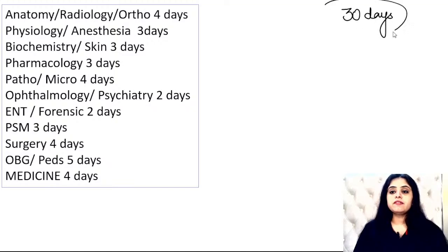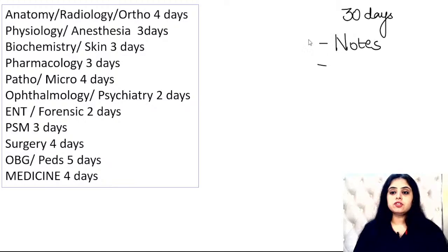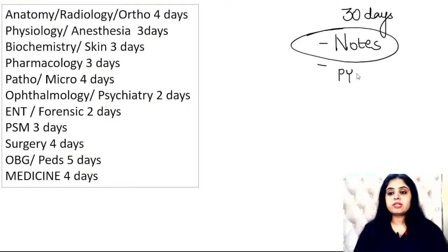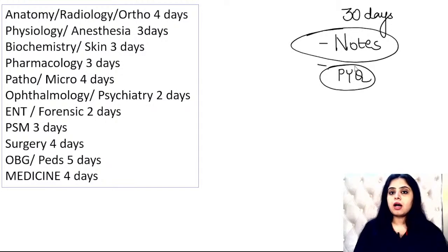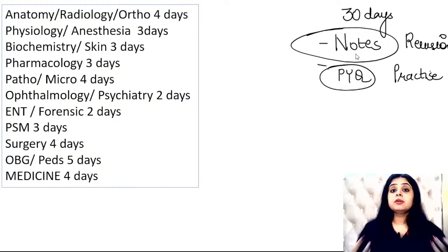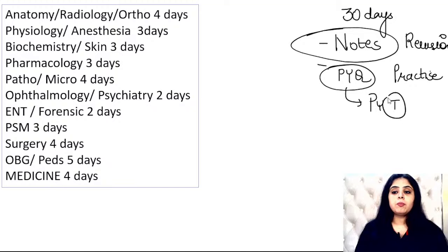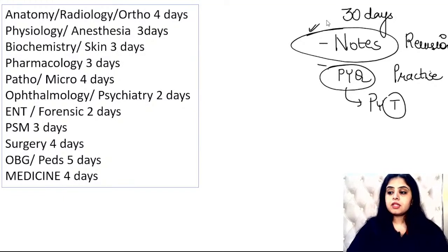If you have to revise the entire syllabus in 30 days, there are two things to do: number one, notes revision — by now everyone has seen videos and has their rapid review notes. Number two, previous year topics and previous year questions. That is all you have to do. You don't have to take up any new question bank or anything new. Just constantly revise your notes and practice previous year questions.